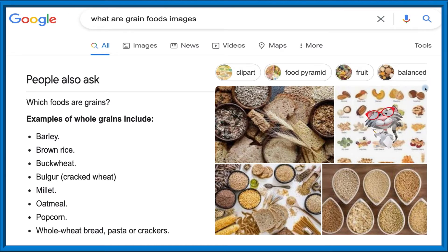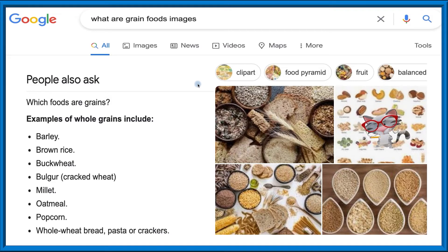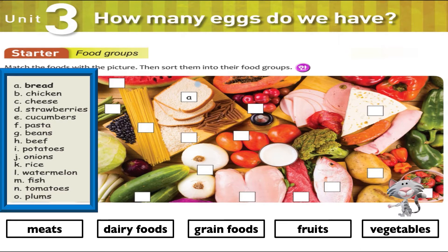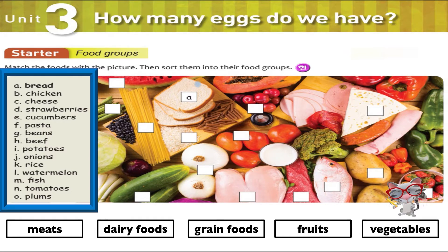So there you go — you can see it's part of a balanced diet. Grain foods are part of a balanced diet. Today we have to learn a lot of vocabulary. You may already know it, but this is just giving you a little bit of extra information. So lastly, we have fruits and vegetables.